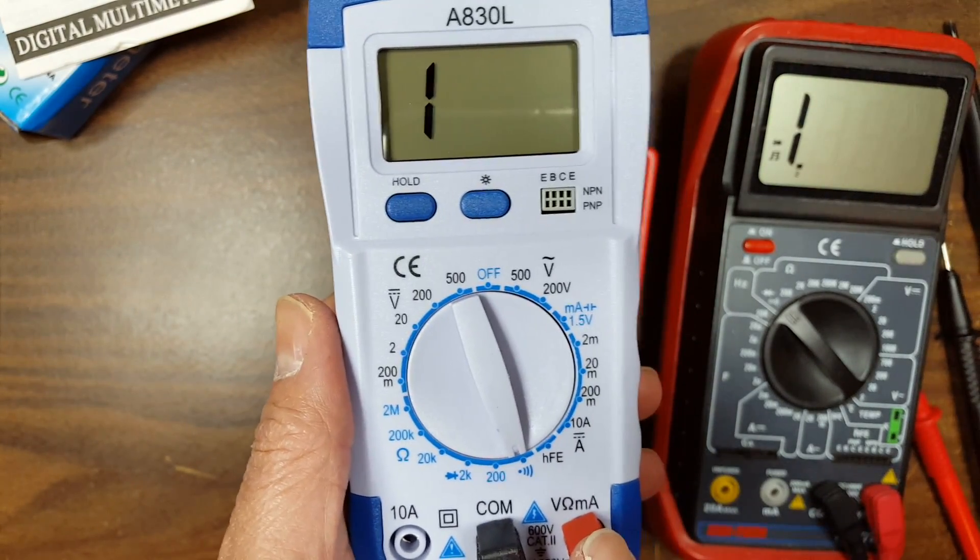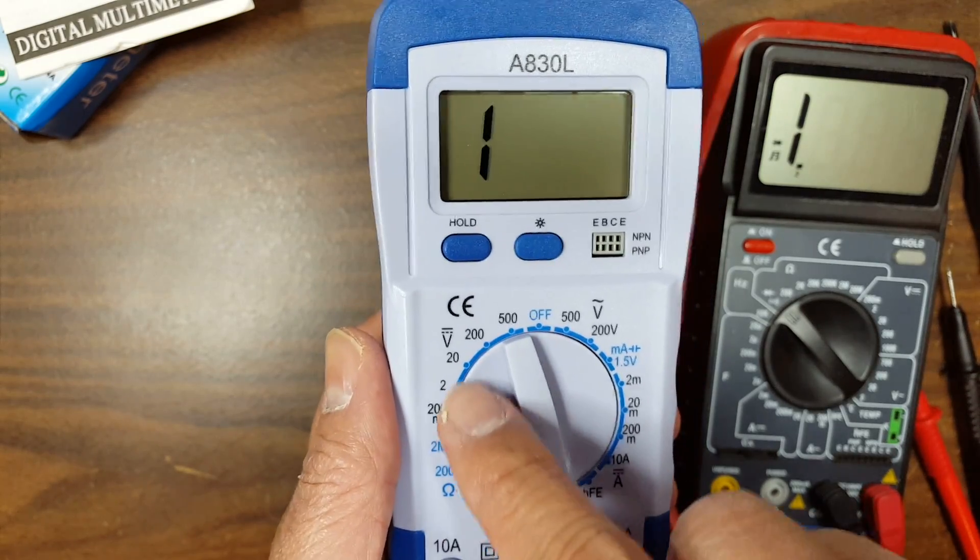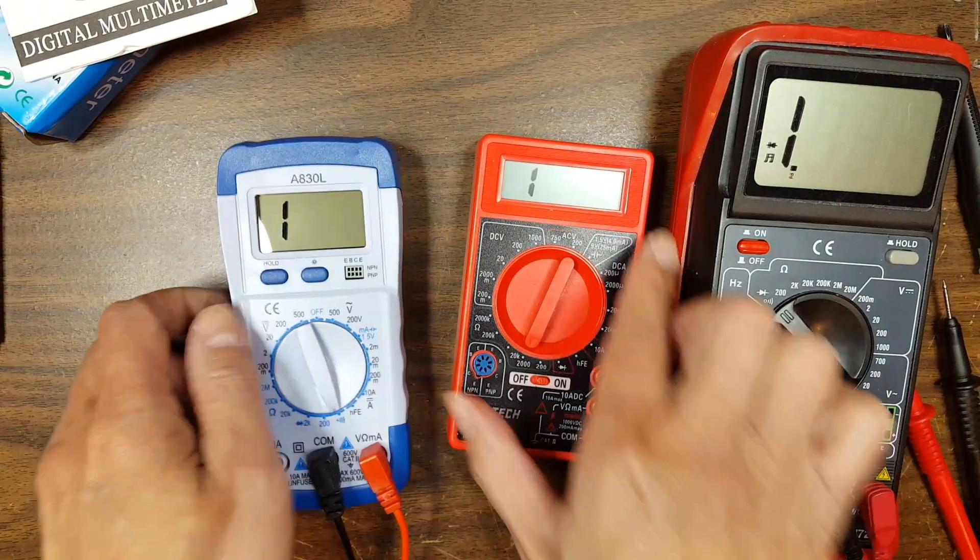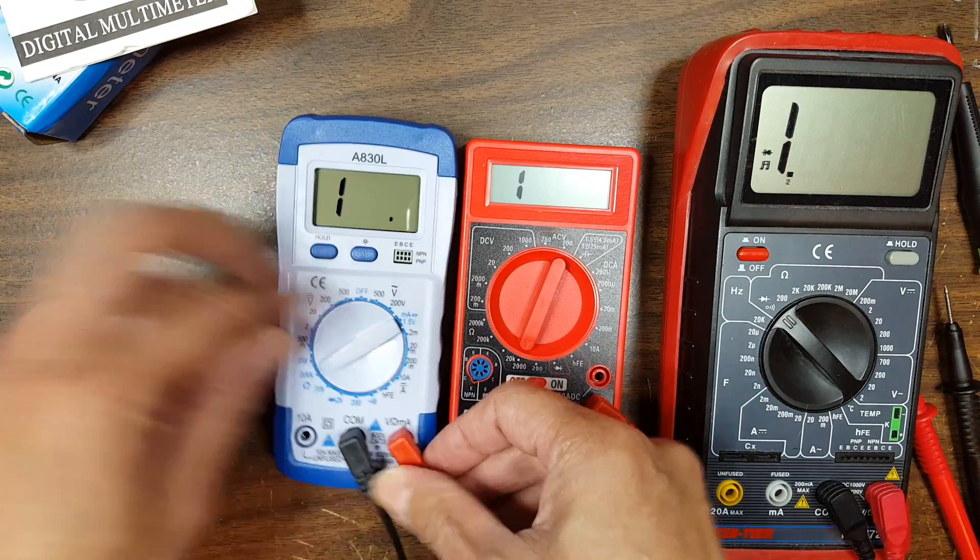It has a transistor tester, that's kind of nice. But other than that, it's just a regular multimeter with current, resistance, DC voltage and AC voltage. So let's see how accurate they are compared to each other. Let's do DC voltage.